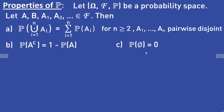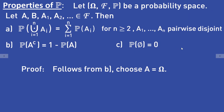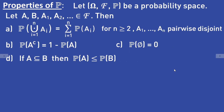The probability of the empty set is equal to zero. This follows from the complement rule — just choose A equal to omega, so the complement of omega is the empty set, and the probability of the empty set equals 1 minus 1 equals zero. Also, if A is a subset of B then the probability of A is less than or equal to the probability of B.